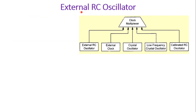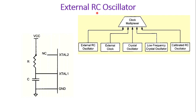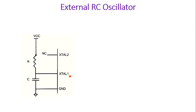The next option to provide the clock is the external RC oscillator. We can connect an external RC oscillator to the microcontroller via XTAL1 and XTAL2 pins of the ATmega32. In order to provide an external RC oscillator, we need to connect a resistor and capacitor to pin XTAL1. In that case, the XTAL2 pin is not connected — NC means not connected. This will provide the clock to this pin and the microcontroller will work on that particular frequency.